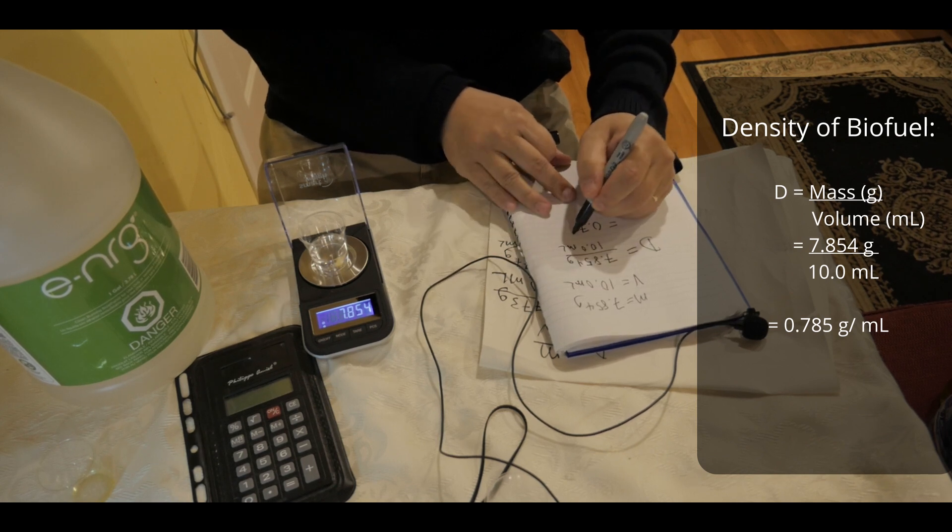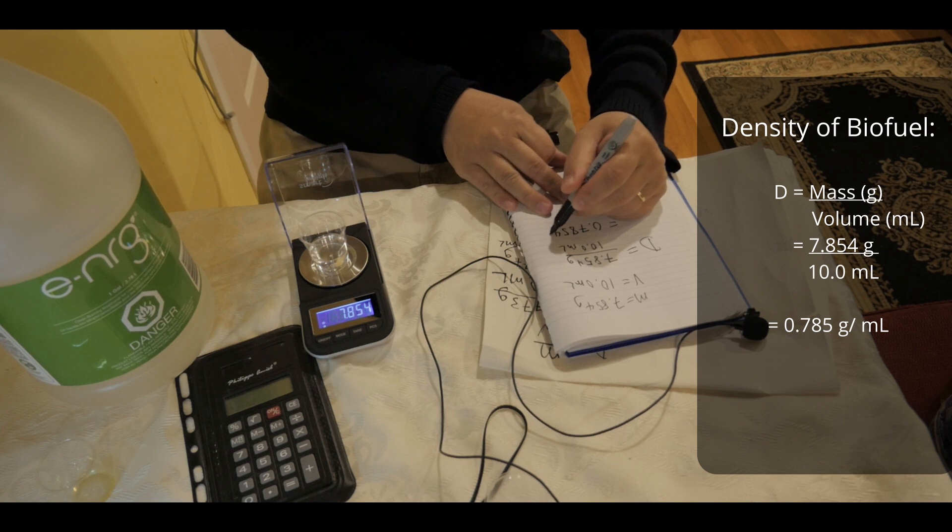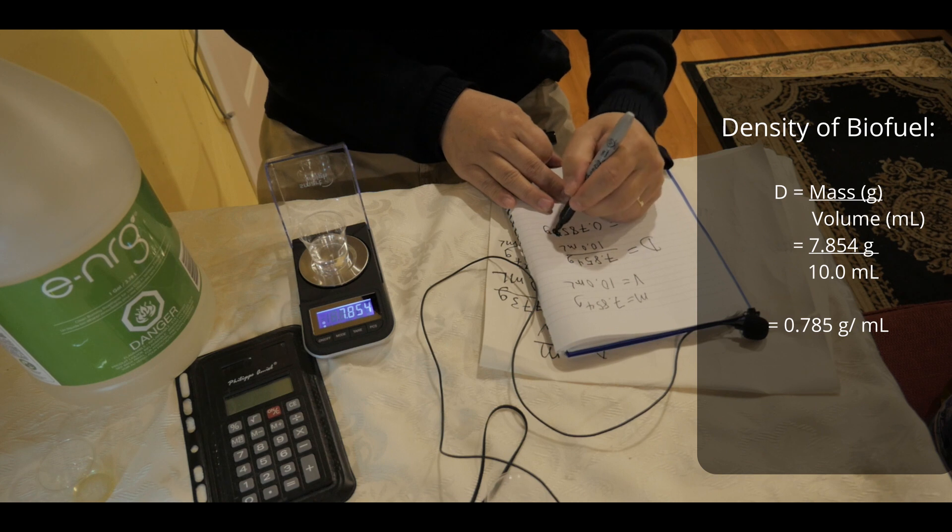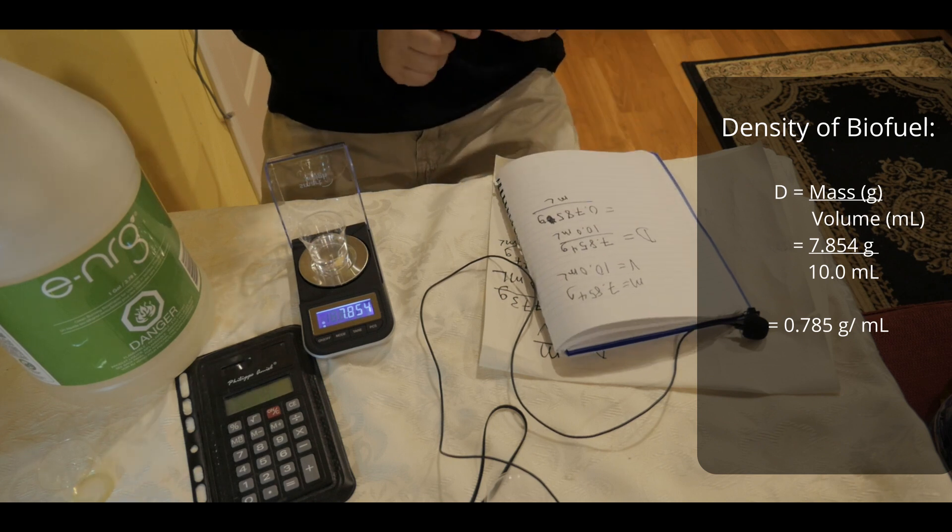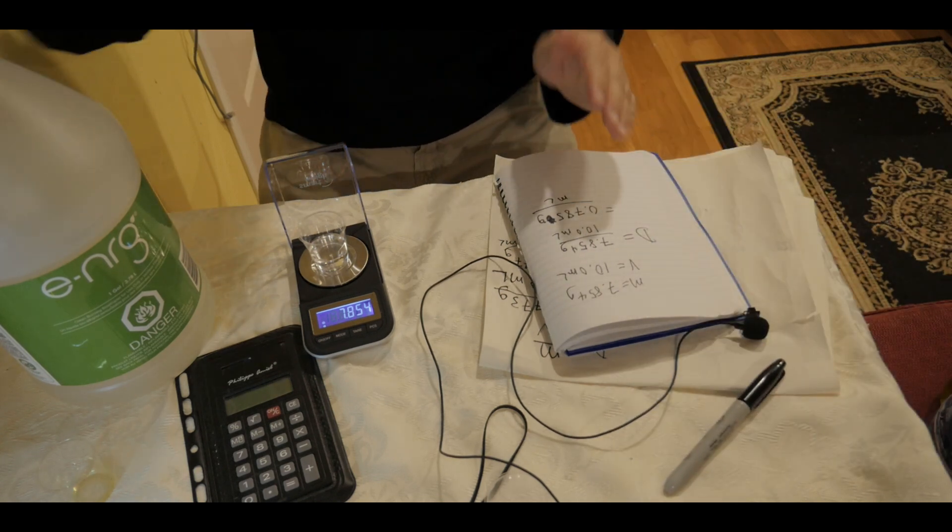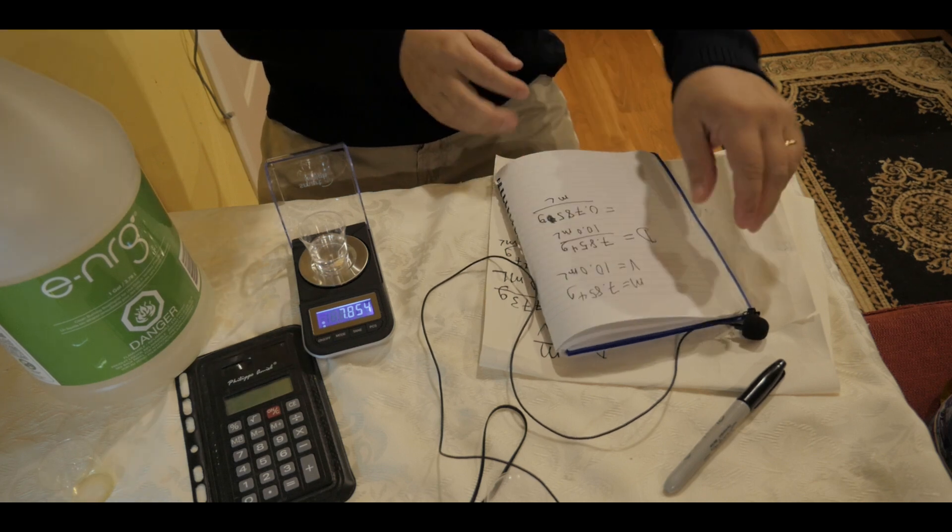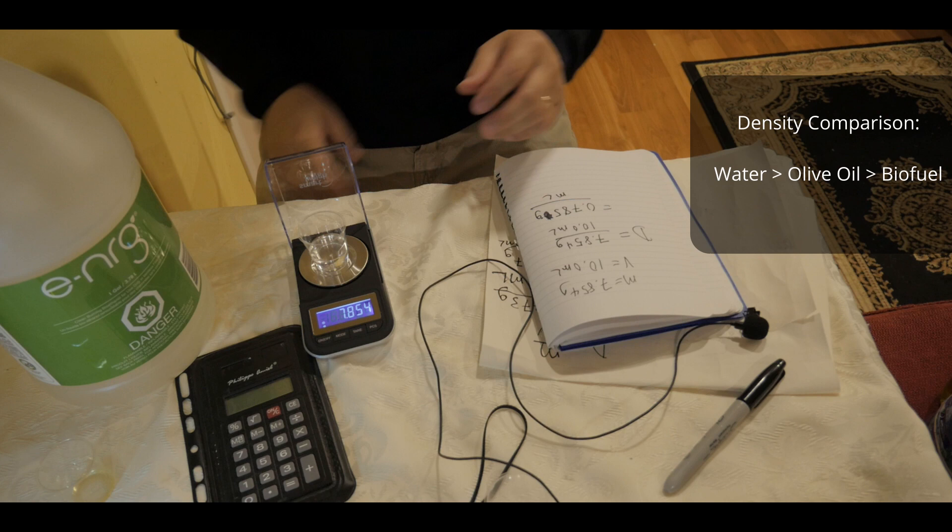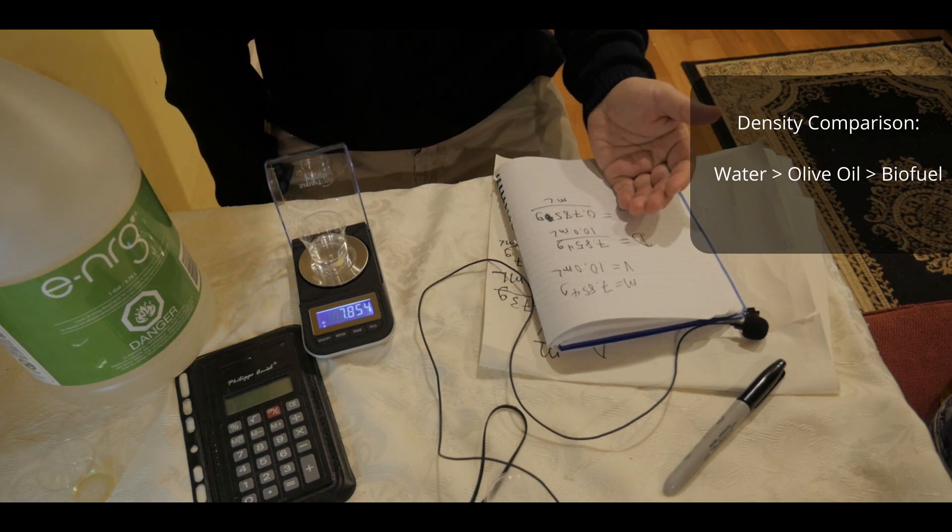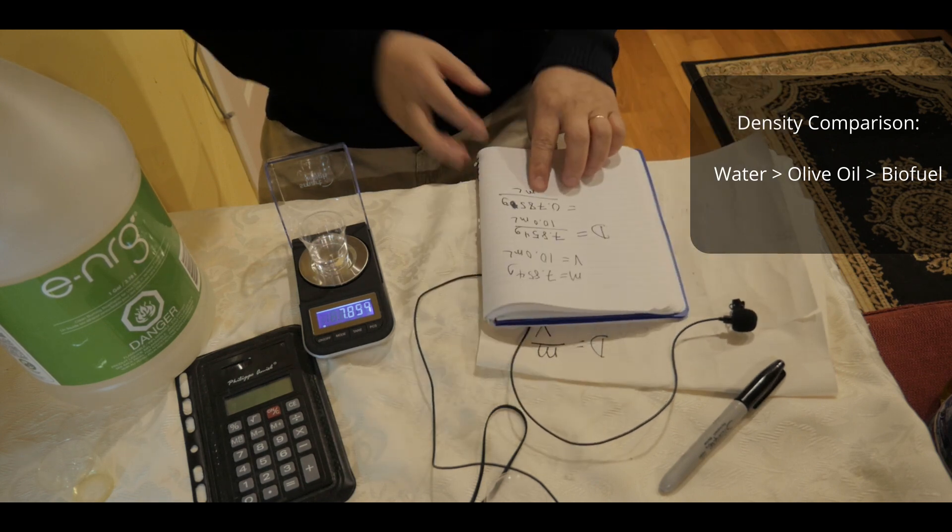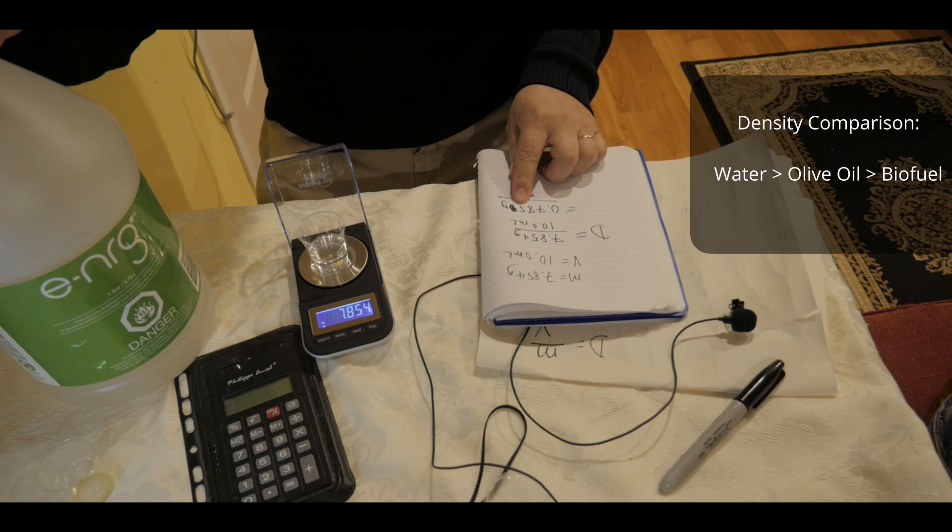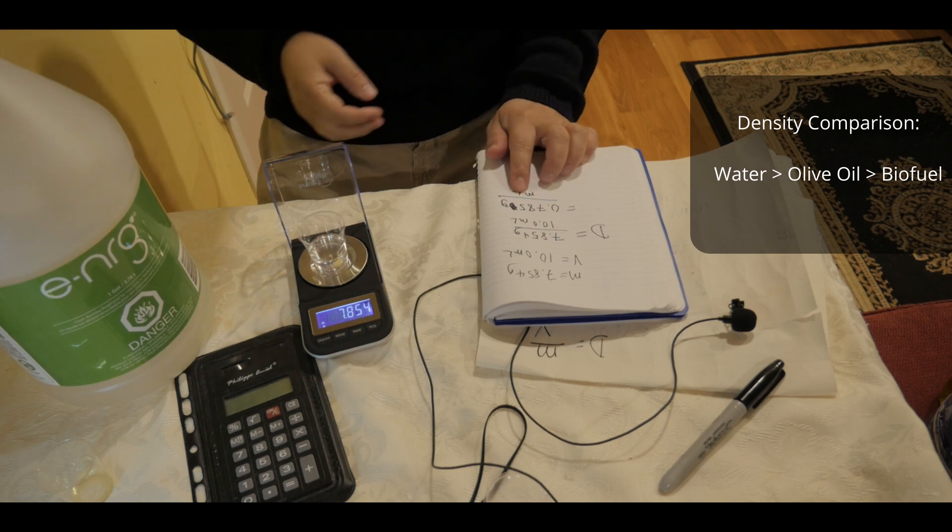7.854 grams per 10.0 milliliters. So 0.7854, but because of the three significant figures only, it's going to be 0.785 grams per milliliter. So that would mean that this biofuel is even less dense than the oil. From ranking, you have water being most dense, followed by olive oil, which is 0.857 grams per milliliter. And then of course the biofuel, which is 92% ethanol and 8% isopropyl is only 0.785 grams per milliliter.